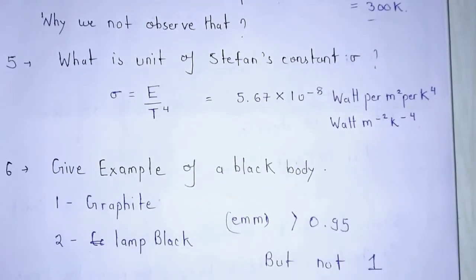My next question is give the example of black body. I have two examples. First one is graphite and second one is lamp black. Both of them have emissivities or absorptive power greater than 0.95 but not exactly one. That's why both of them are not an ideal black body.